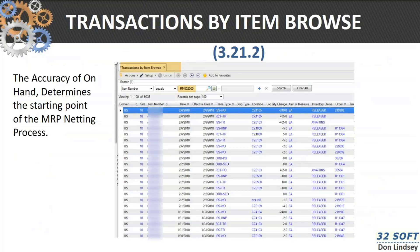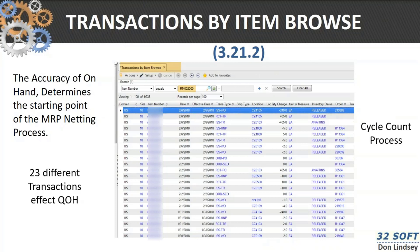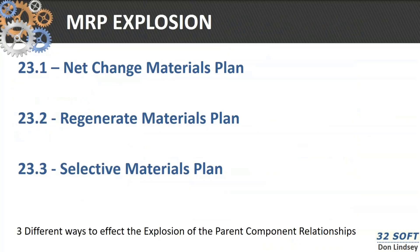In the transaction by item browse, you're going to see all of the transactions that affect quantity on hand. Quantity on hand is the starting point of the MRP netting process, so if that's not correct, MRP is not going to be correct. There are 23 different transactions that affect quantity on hand, so if you've got a cycle count process, you need to understand what each one of those transactions is and how it has affected that quantity on hand.